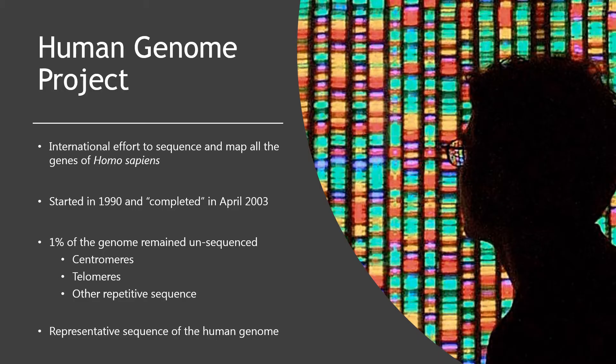The centromeres are millions, possibly tens of millions, of base pairs long. The ends of the chromosomes, called telomeres, are also highly repetitive. There are also several loci in each individual's genome that contain repetitive sequences that are difficult to sequence. Other than these regions, 99% of the human genome sequence has been completed.